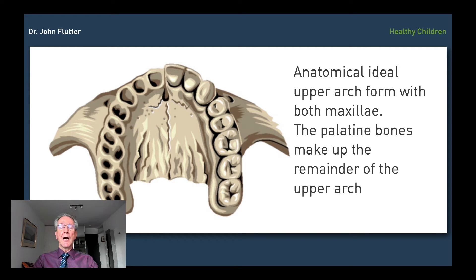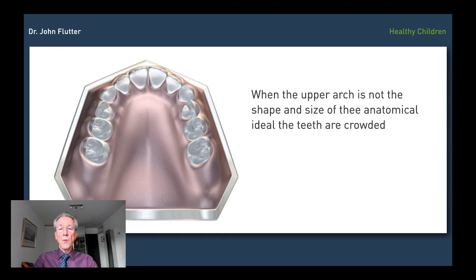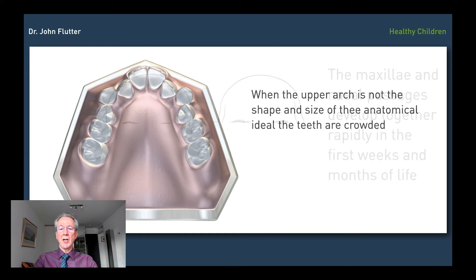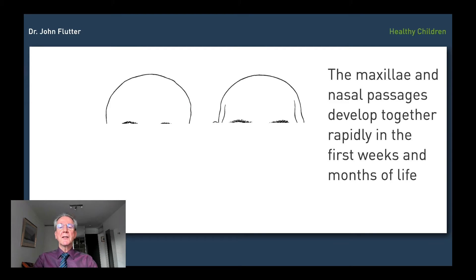The maxillae — two bones that form the upper dental arch. If we look at the anatomical ideal, surely we must judge a child's growth and development of their maxillae against this anatomical ideal form. And if we see the anatomical ideal form, then we consider that the growth and development of that part of the cranium is going well. But if we see teeth that are crowded and the jaws don't match each other, then we have to conclude that the underlying bone has not developed to the anatomical ideal shape and size. We need to understand that at birth, most of the development of the lower and middle third of the face has not taken place.